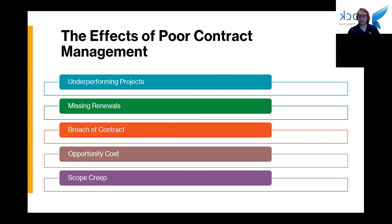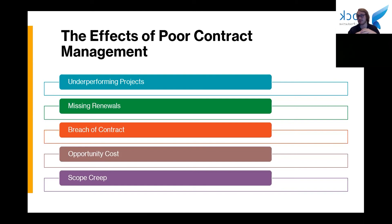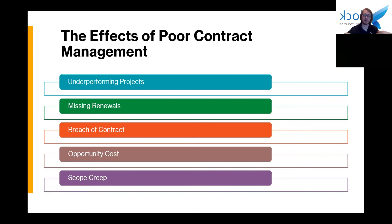Going back to opportunity costs: money spent on underperforming contractors and bad products is a waste of time. If your contractor isn't doing what they're supposed to, but they have an auto-renew clause and you're not paying attention, suddenly you have another six months to a year of paying for that. Any money and time spent rectifying failures in the contract management process is money and time you could be spending investing in other areas of your business — things that will actually improve your bottom line.